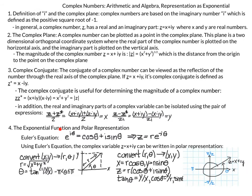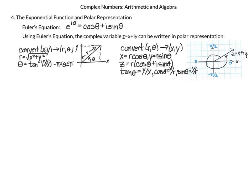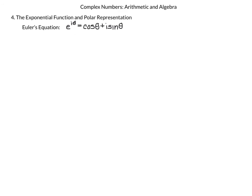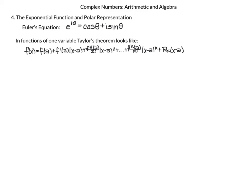Our last topic is the exponential form of a complex number and polar representation — this is probably where things start to get new. e to the i theta equals cosine theta plus i sine theta. This is known as Euler's equation. I'm going to show you how it's derived, and then we'll use it to represent complex numbers in polar coordinates. We'll derive it through Taylor's theorem, which I feel is a really important theorem to be familiar with.